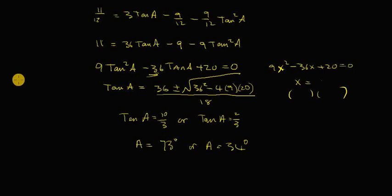But if that was a bit confusing to you, you could say let x equal to tan A. And then you would get 9x squared minus 36x plus 20 equals 0. You're going to get x is equal to 10 over 3, or you're going to get x is equal to 2 over 3. But then you're going to say, well, x is equal to tan A. So you're going to go tan A is equal to 10 over 3.